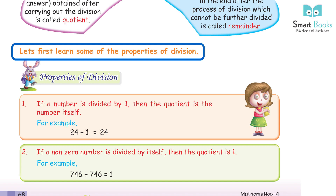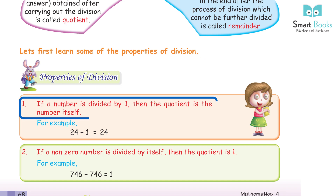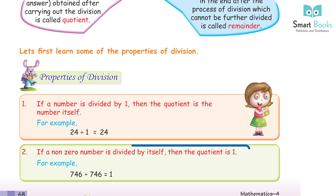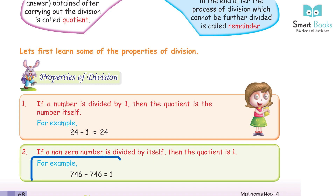Properties of division: Property 1 — if a number is divided by 1, then the quotient is the number itself. For example, 20 divided by 1 equals 20. Property 2 — if a non-zero number is divided by itself, then the quotient is 1. For example, 746 divided by 746 equals 1.